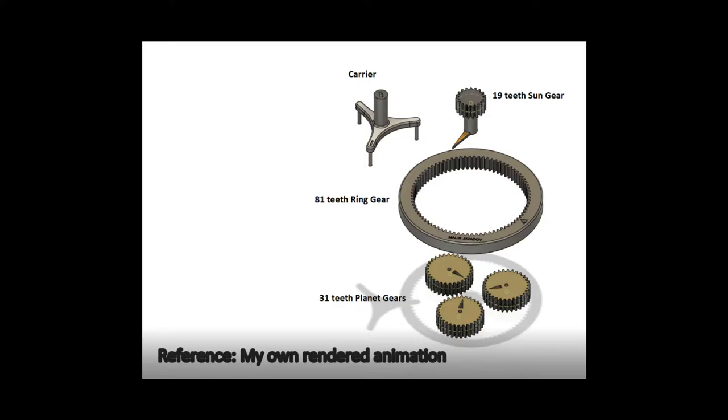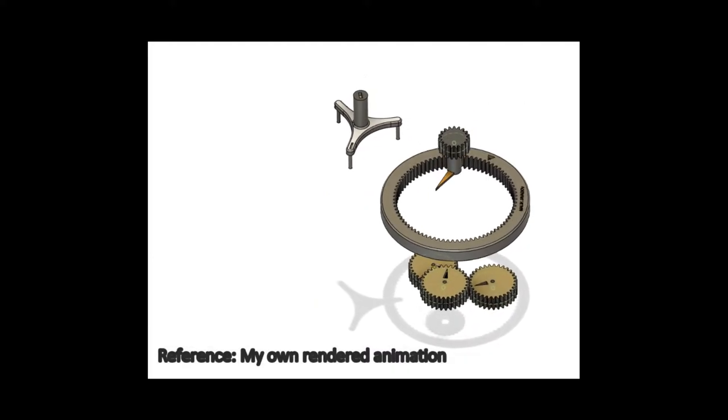A planetary gear set has four main parts: the sun, the planet gears, ring gear, and the carrier. The number of teeth shown is as a reference for the working mechanism of unevenly distributed or displaced planet gears.